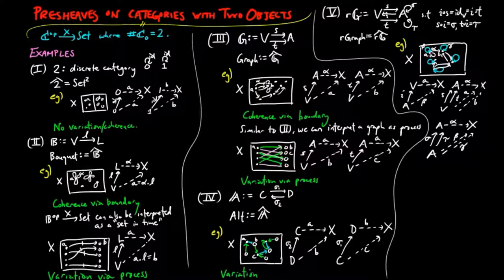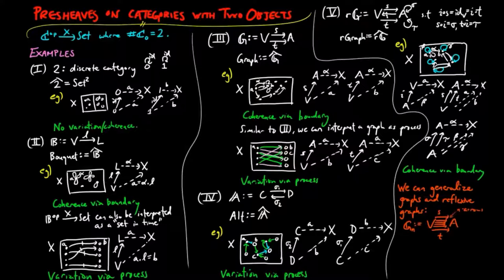This category is useful if we want our graph morphisms to be allowed to map an arc to a vertex. Note that we can generalize graphs and reflexive graphs to n-uniform hypergraphs, which take values in multi-sets.